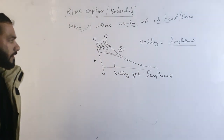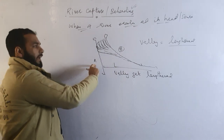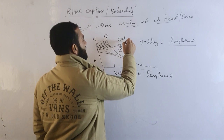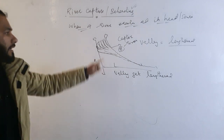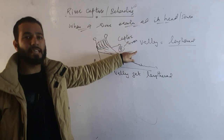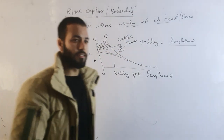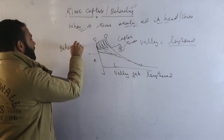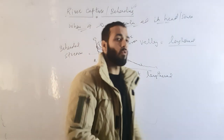River B has captured river A, so river B is called the captor river. The river which has been captured — river A — is called the beheaded stream.